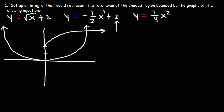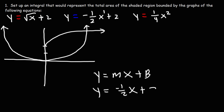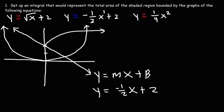Notice that this graph is in slope-intercept form. We can see m is negative one-half, and the y-intercept b is two. So this graph is going to start here and go down in this direction. We can see that this is the area bounded by all three curves. There are three points of interest we need to find: here's the first point of intersection, here's the second, and here's the third.